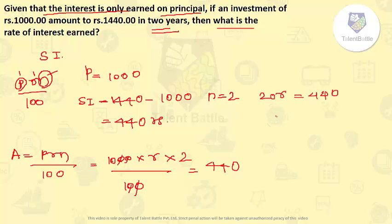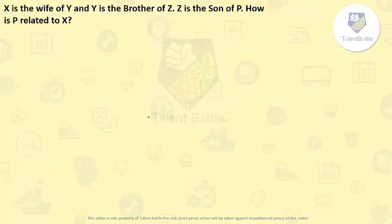So rate will be 440 upon 20, which gives us 22 percent. So the rate here is 22 percent.